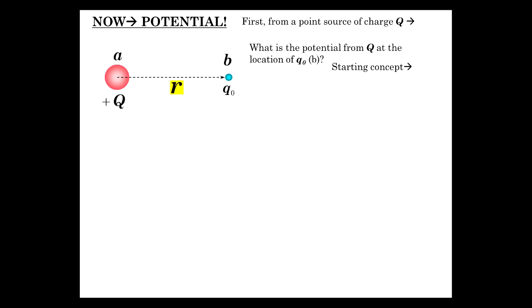So what is, in particular, the potential from Q, from this charge here at this location B? Now, it turns out it doesn't really matter, it doesn't matter at all actually, about what Q0 is. The energy between these has a lot to do with Q0, but not the potential.